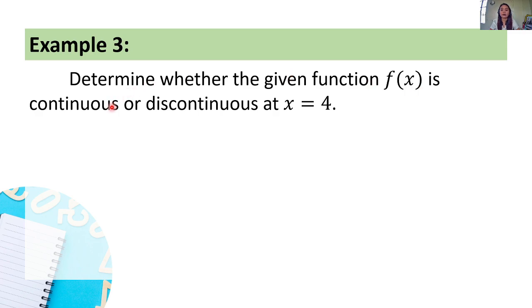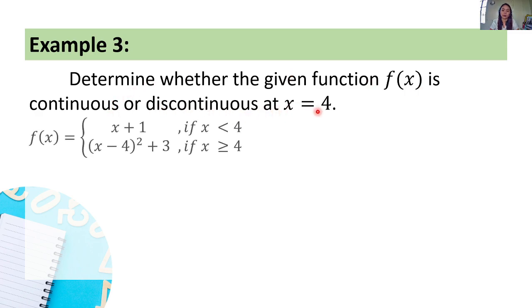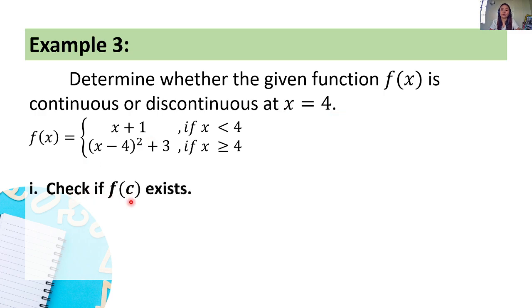Example number 3: determine whether the given function f of x is continuous or discontinuous at x equals 4. We're given a piecewise function. f of x equals x plus 1 if x is less than 4, and f of x equals the quantity of x minus 4 squared plus 3 if x is greater than or equal to 4. With piecewise functions, we need to consider the sub-functions and check the conditions for each.